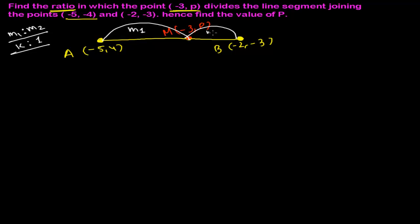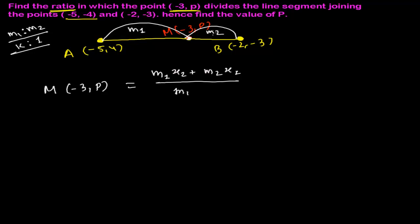I choose the ratio m1:m2. Now, point M which is (-3, p) will be given by the section formula. The section formula gives: x-coordinate = (m1·x2 + m2·x1) / (m1 + m2), and similarly the y-coordinate = (m1·y2 + m2·y1) / (m1 + m2).